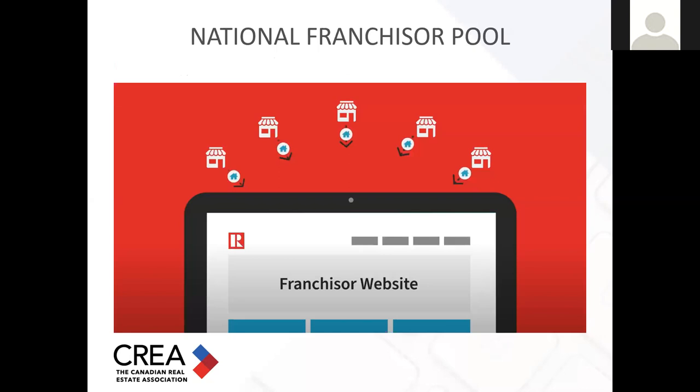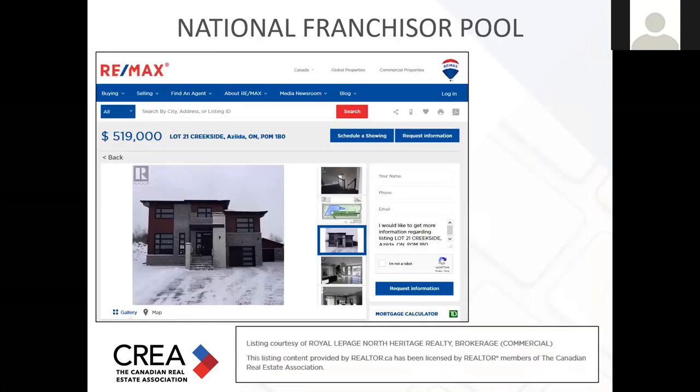We also have the National Franchiser Pool, which allows participating brokerages to share listing content with multiple franchisers. You can distribute listings to a number of franchisers — it's always about giving more exposure. There are currently nine franchises that have access to the National Franchiser Pool. Here's an example of a RE/MAX national site offering a listing courtesy of Royal Lepage.